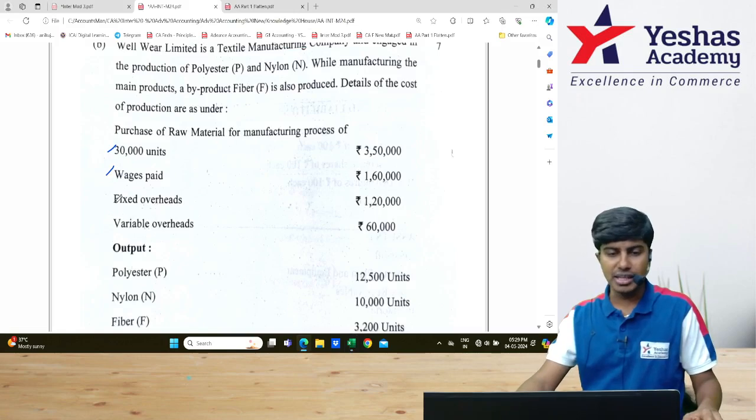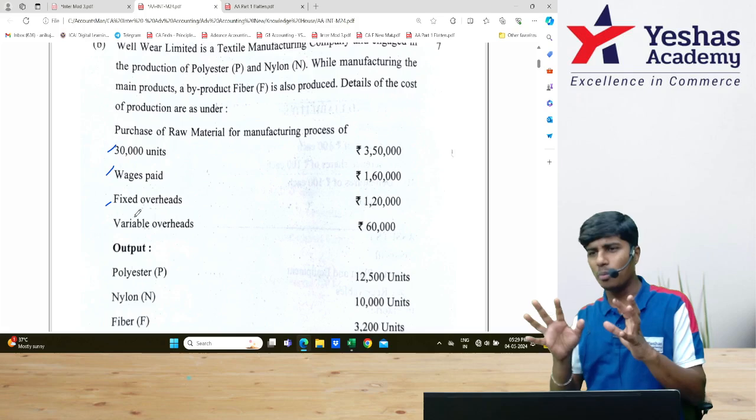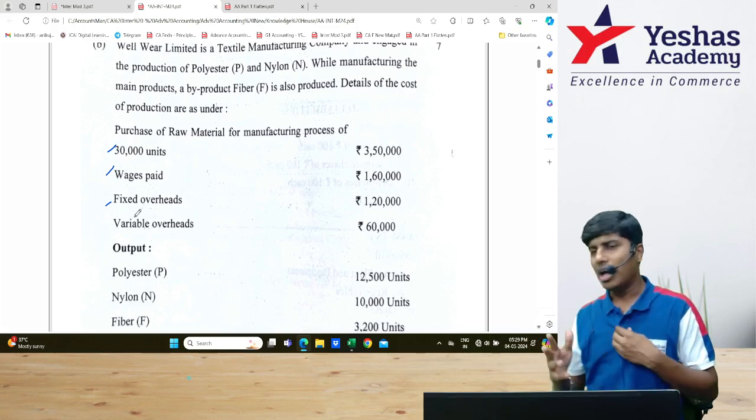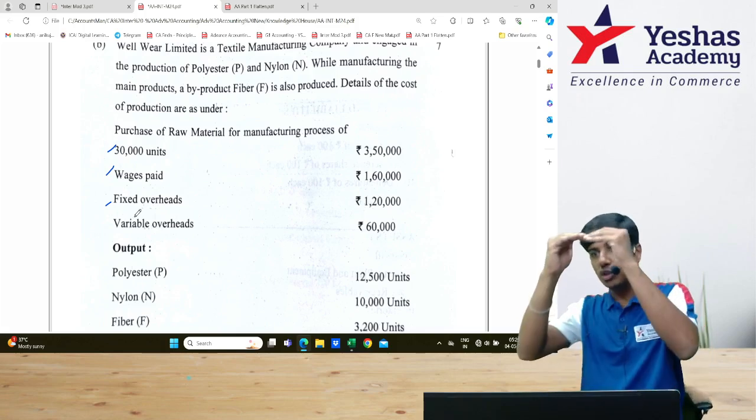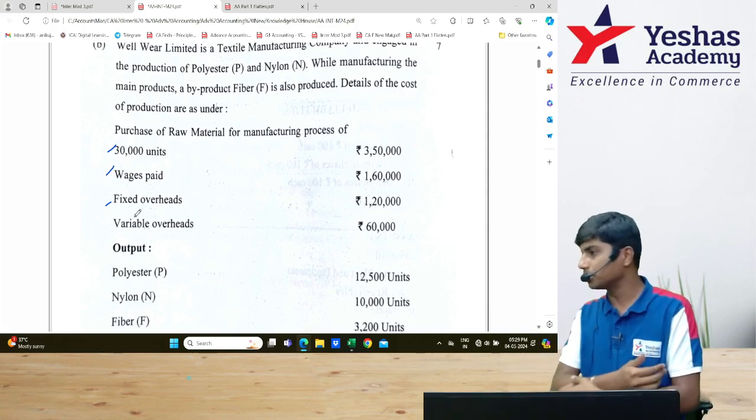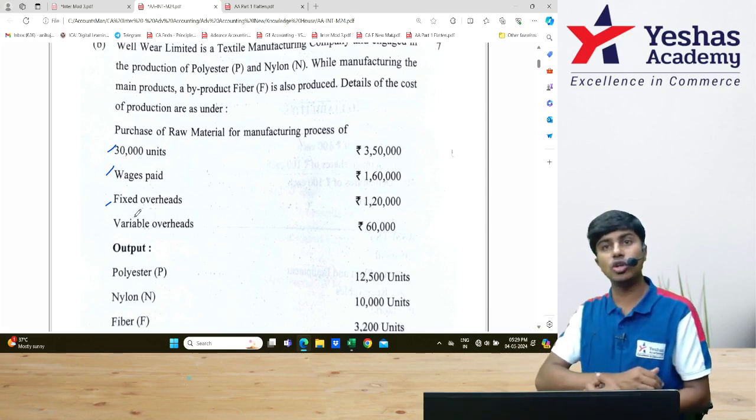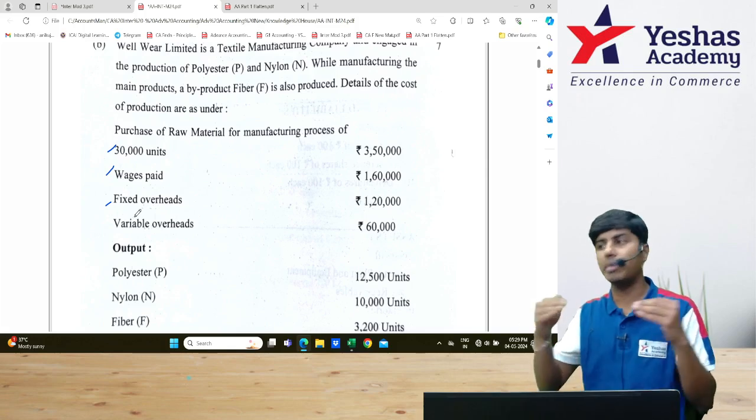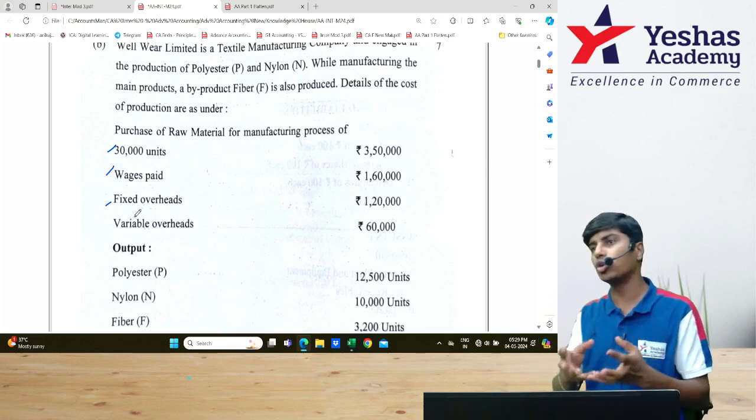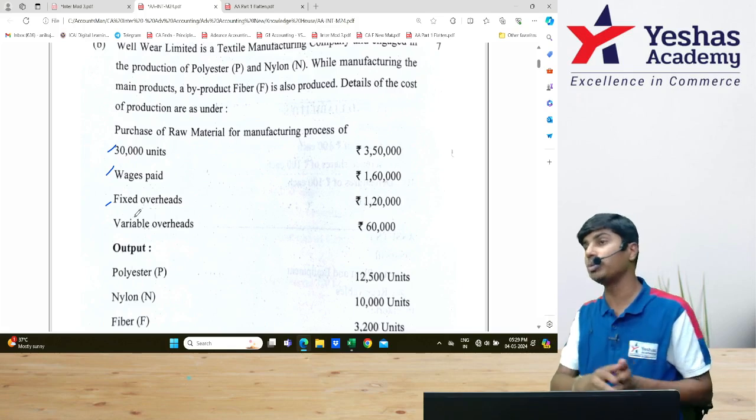After wages of ₹1,60,000, what I have next is fixed overhead. We are assuming that there is no problem with actual and normal production. Actual output, normal output, let us say both are matching. We have to make that assumption. So we are assuming here that actual output and normal output both are matching.